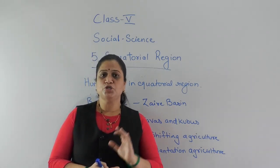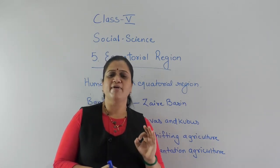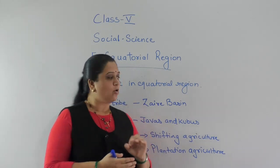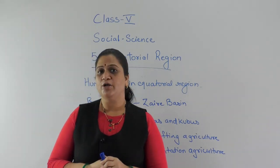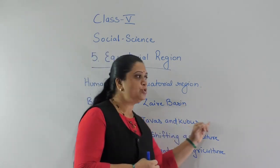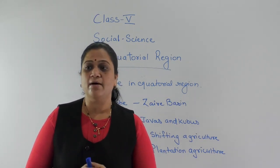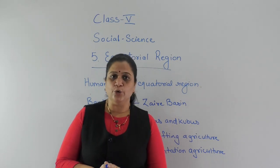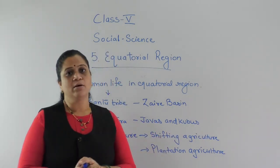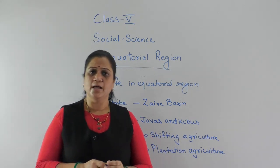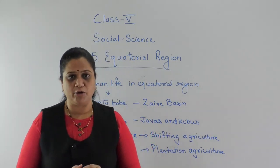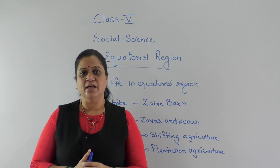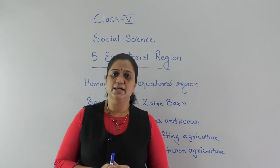This is about the human life in the equatorial region. In short, the equatorial region has a very sparse population because of the dense forest. Some of the tribes found in the Congo Basin are Bantu tribes, and the islands of Indonesia — that is, the Sumatra island — have the Java and Kubus tribes. These people earn their livelihood in the forest itself. We have also studied about the two types of agricultural activities practiced in the equatorial region. Today we have completed the lesson on equatorial region, covering location, climate, plant life, and human life. We will conclude the lesson with this lecture. Thank you.